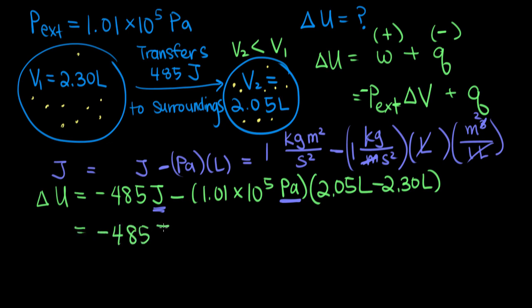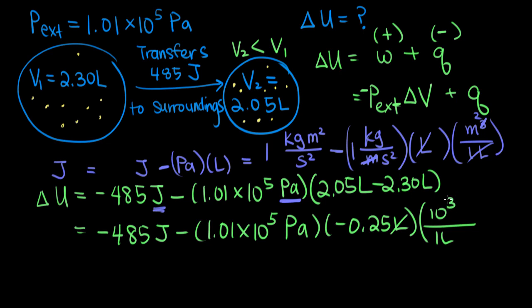So if we do that, we get that minus 485 joules, 1.01 times 10 to the fifth Pascals, times negative 0.25 liters, which is the change in volume, which is negative. The volume went down, so the change in volume should be negative. And then we have to add one more thing here to convert our liters to meters cubed. So one liter is equal to 10 to the minus third meters cubed. So now our liters cancel out, and Pascals times meters cubed gives us joules.